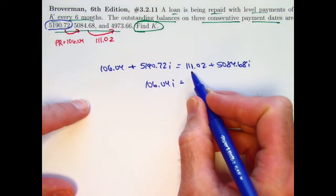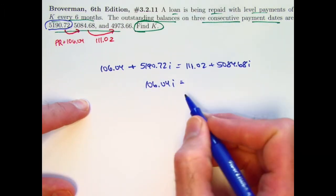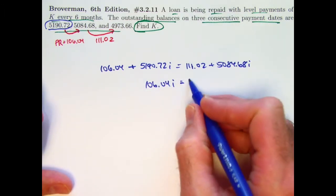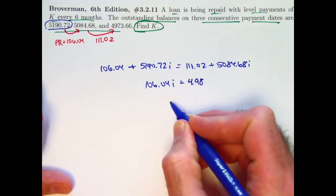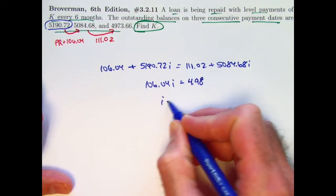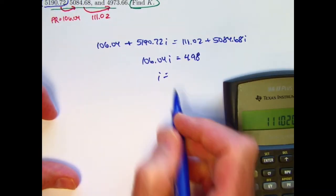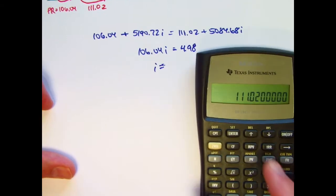And on the other side, I'll have 111.02 minus 106.04. That will be 4.98. So I is going to be 4.98 divided by 106.04.